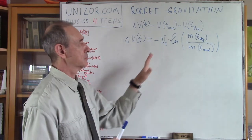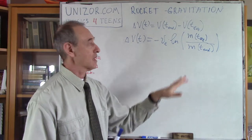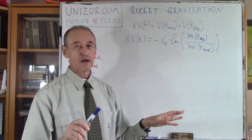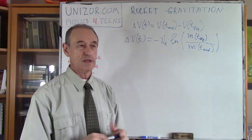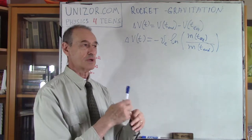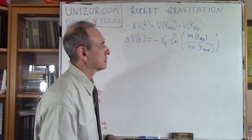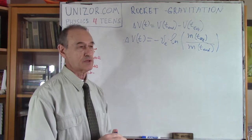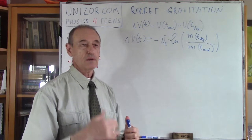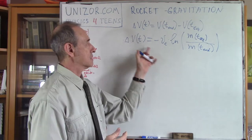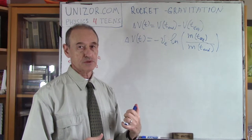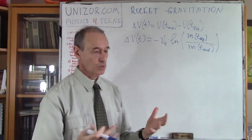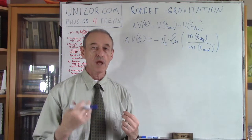Now I would like to introduce gravitation. The previous equation was for empty space — no gravitation, no air drag, no resistance to movement. Now I'm introducing gravitation, and I will use exactly the same logic I used when deriving the ideal rocket equation. My first tool is the conservation of momentum — I will check what the momentum of the rocket is at the beginning and end of its movement, and they are supposed to be equal to each other.